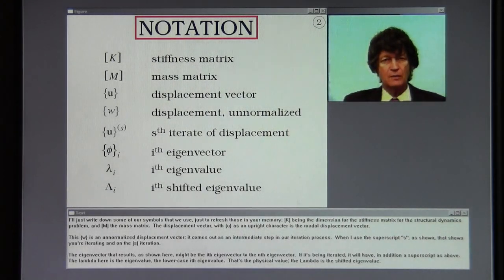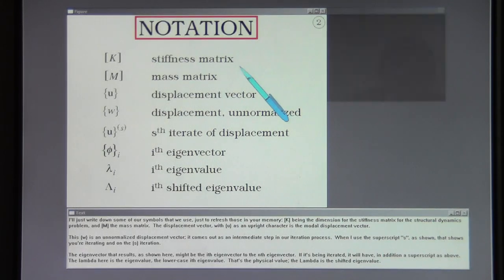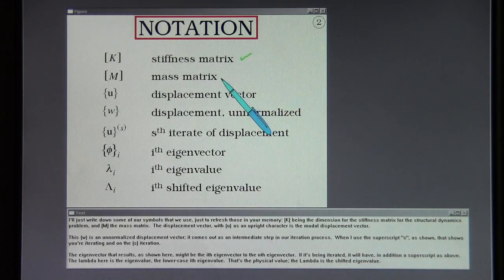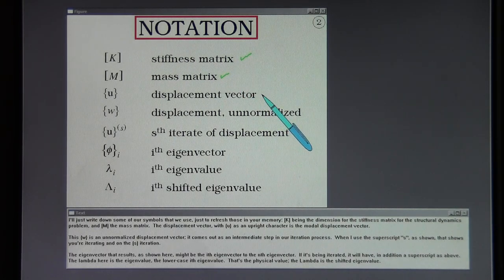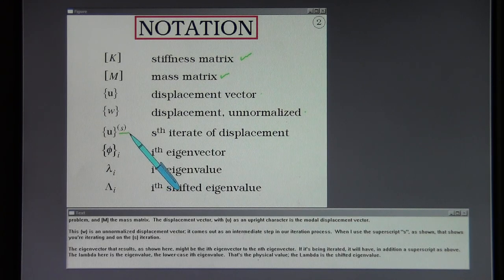I'll write down some of our symbols just to refresh your memory. K is the convention for the stiffness matrix of the structural dynamics problem, and M is the mass matrix. The displacement vector U is the nodal displacement vector. W is an unnormalized displacement vector that comes out as an intermediate step in the iteration process. A superscript S indicates you're on the S-th iteration.